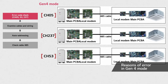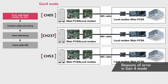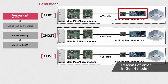As already mentioned, CH05, 237, and 53 are communication errors. When the IDU and ODU are set in Gen4 mode, CH05 indicates an error between the local modem and the main PCB of the indoor unit.